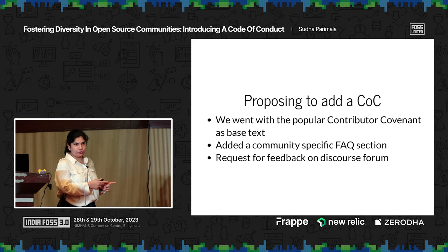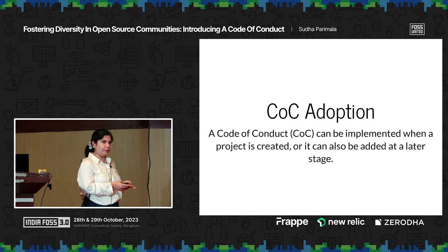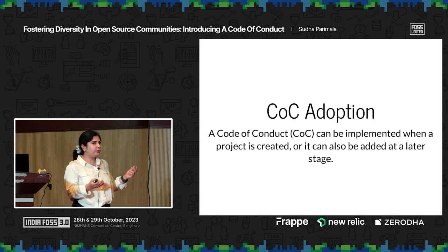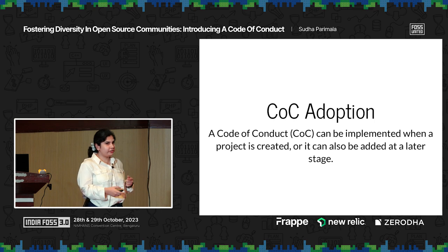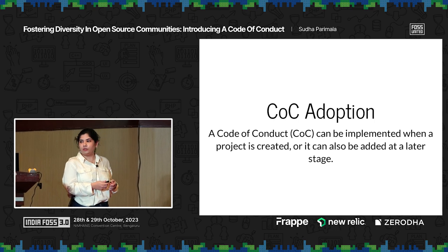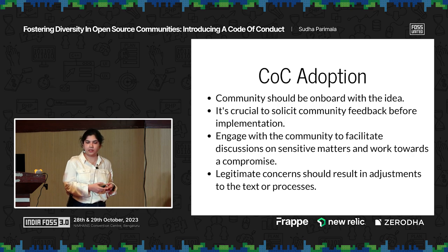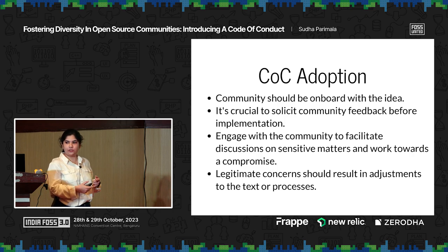We went ahead and proposed adding a code of conduct to all major communication channels within the community. A code of conduct can be adopted when the project is created — that's the easiest way — but when a project is small, people don't always see the need. That changes when the project grows and you have contributors from outside, so it can also be added at a later point. The crucial aspect is that the community needs to be on board with the idea, and legitimate concerns raised by the community should be taken into account in the implementation process.